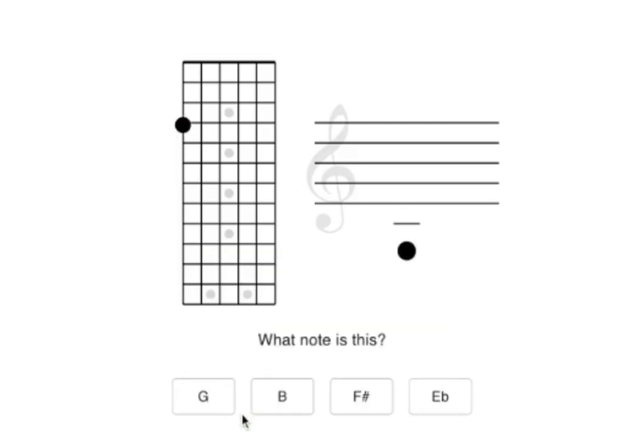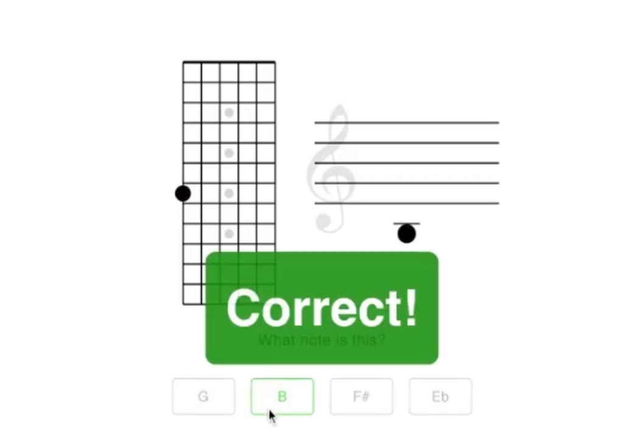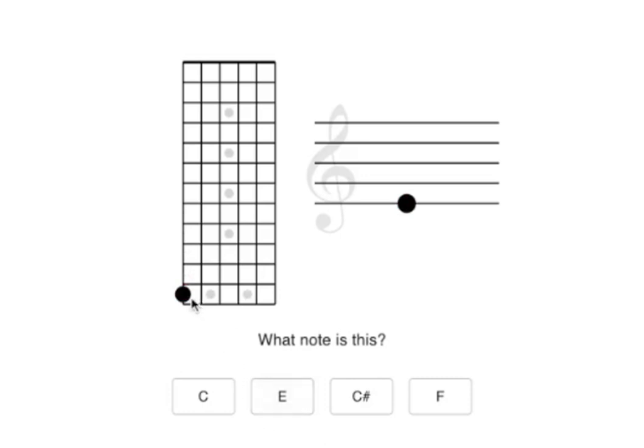That's a G. Okay, the seventh fret on the sixth string. That is a B. The twelfth fret on the sixth string. That is an octave of the open string. So that's an E.